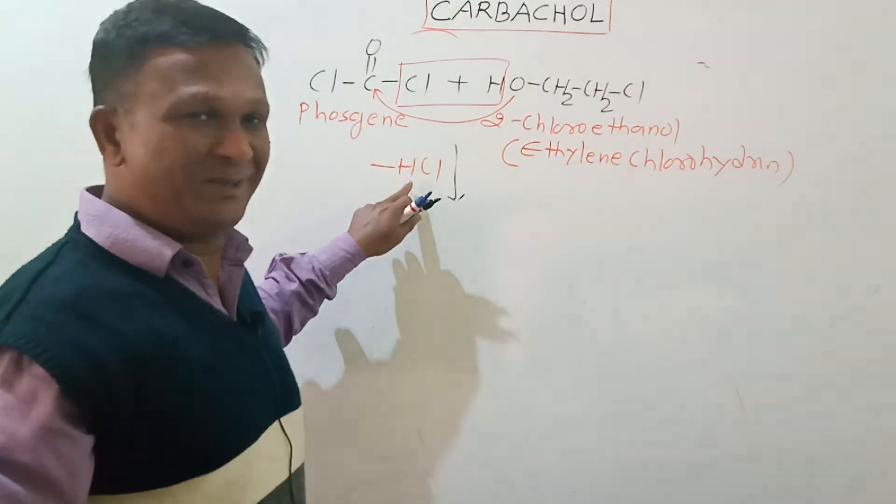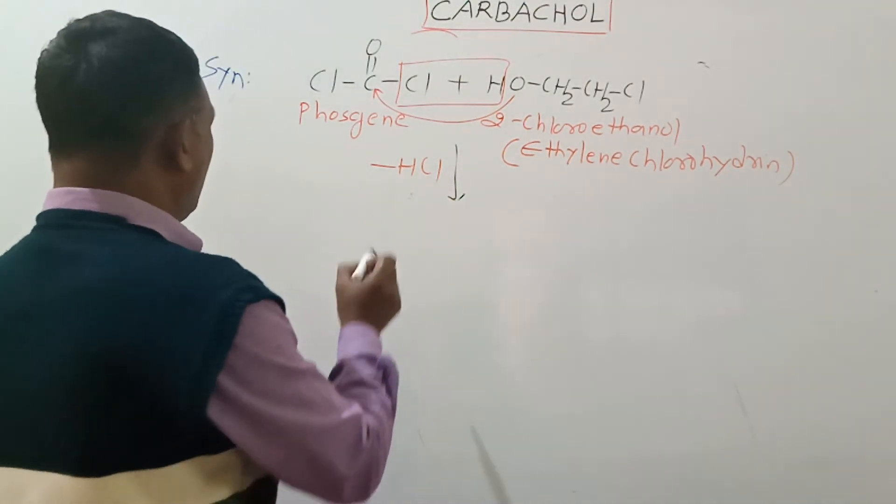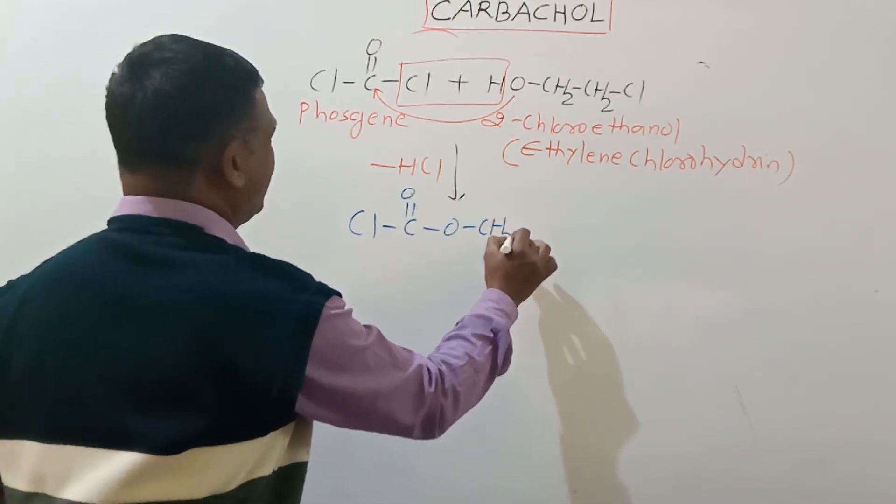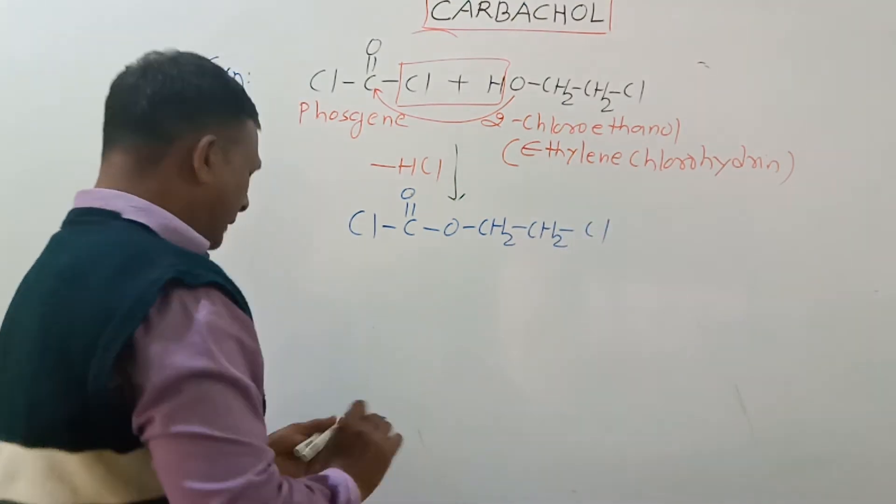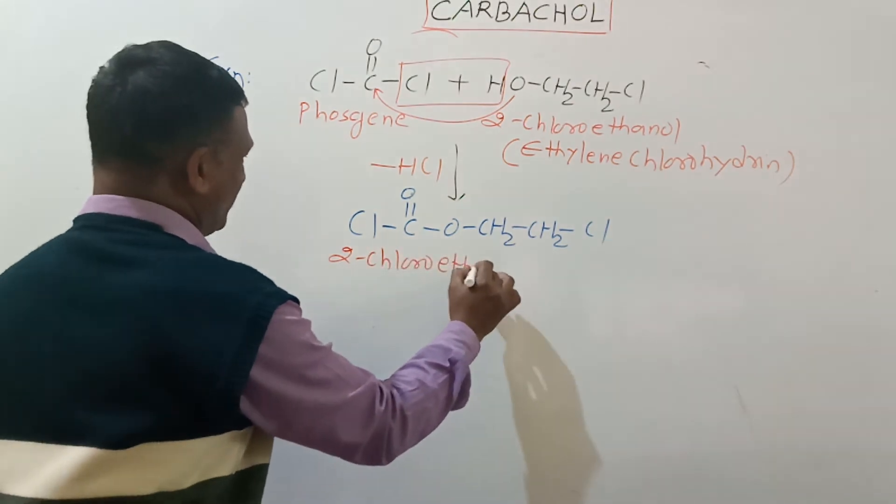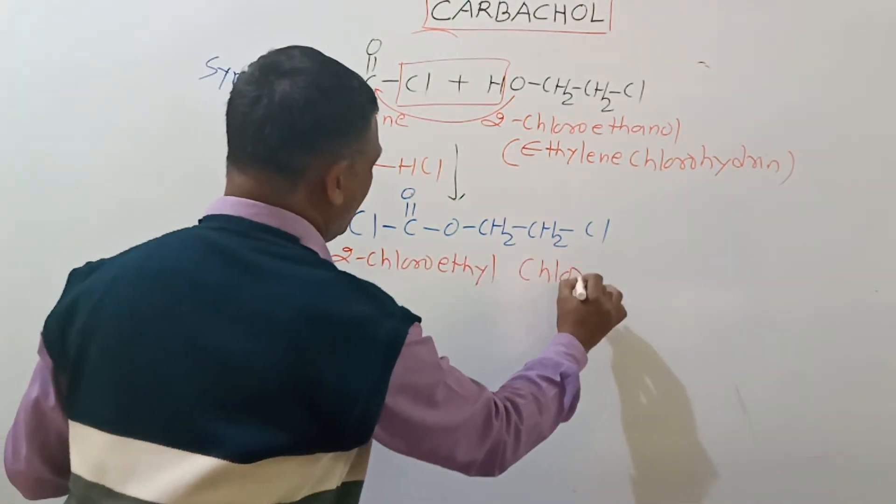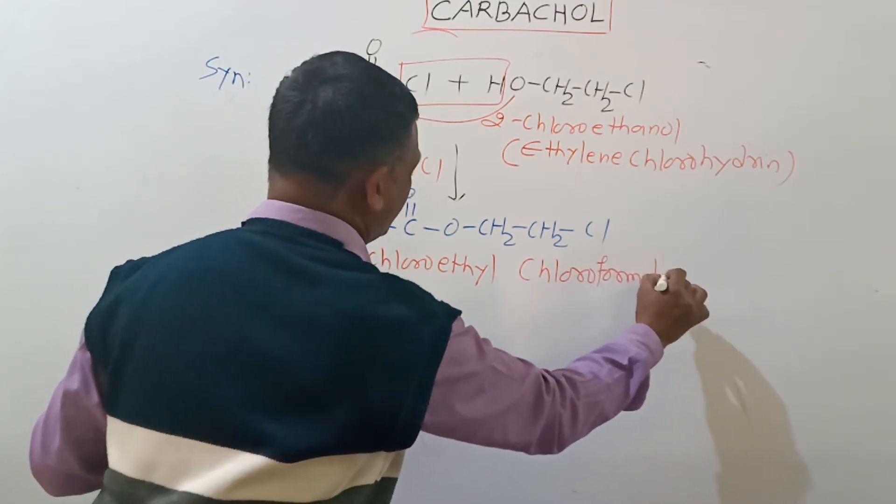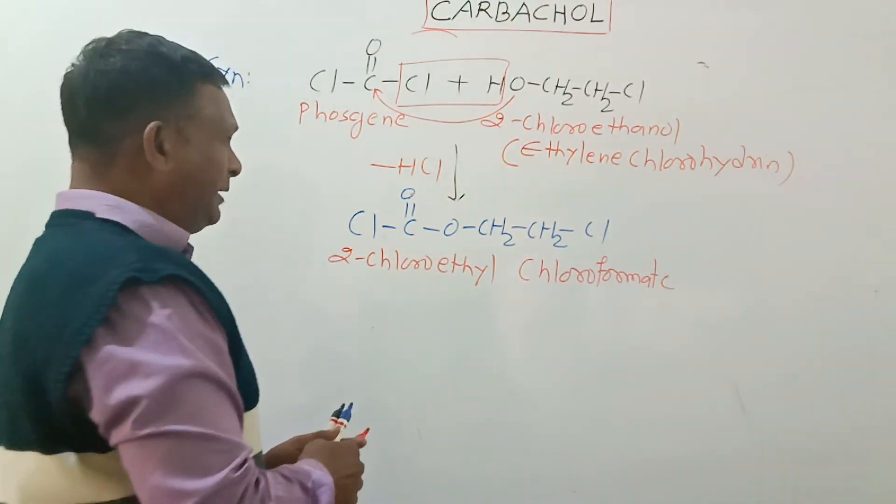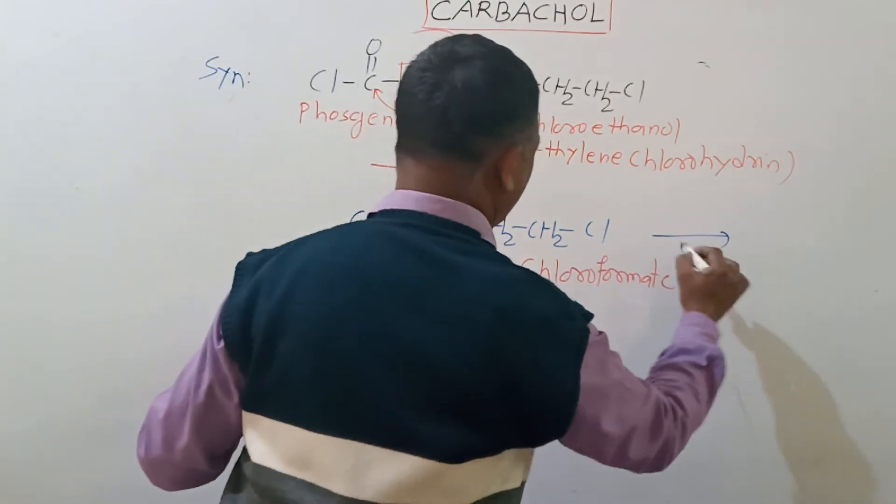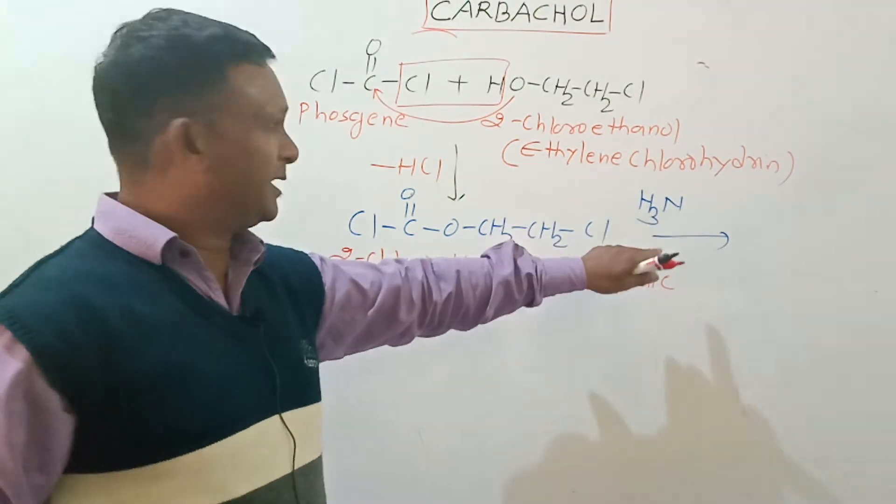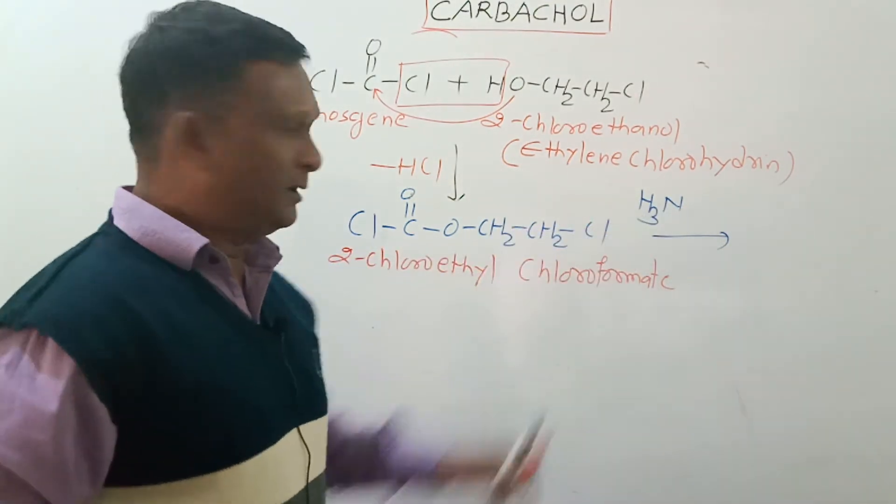So here we get formation of Cl-CO-OCH2CH2Cl, which is called 2-chloroethyl chloroformate. This chloroformate derivative then reacts with ammonia.